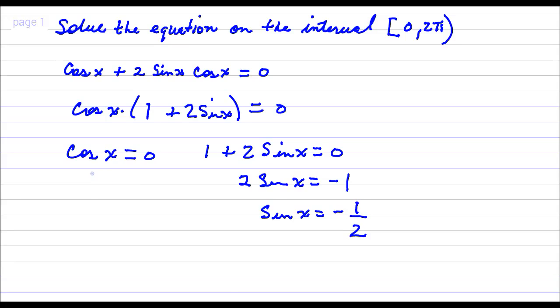Okay, so the cosine of what angle is zero between zero and 2 pi? That would be pi over 2, and cosine is zero at 3 pi over 2 also. Okay, and that's it for that equation.